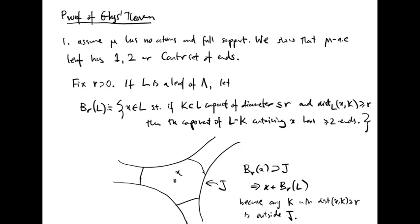Now let's begin the proof of Gise's theorem. We assume a harmonic measure mu has no atoms and has full support. The first part of the argument, valid in any dimension, shows that for mu almost every leaf, there is either one, two, or a Cantor set of ends.